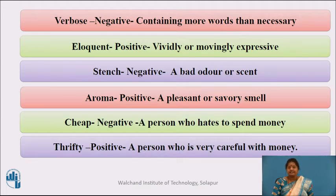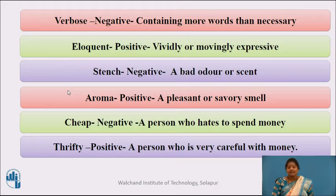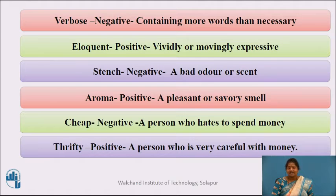When you describe a person as very eloquent, it means he has great communication skills. 'Stench' has a negative connotation meaning a bad odor, whereas 'aroma' has a positive connotation meaning a pleasant or savory smell. 'Cheap' has negative connotations meaning a person who hates to spend money, whereas 'thrifty' has positive connotations meaning a person who is very careful with money. So when you say she is very thrifty, you are praising her, but when you say she is very cheap, it means she hates to spend money.